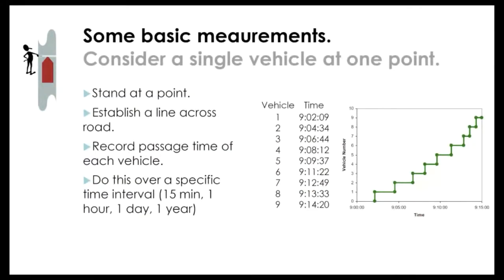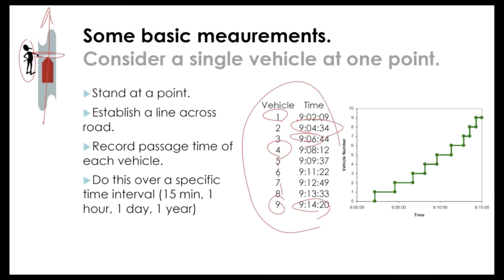For basic measurements, consider a single point on the road. Imagine you're standing on the side of the road, establishing a line across it, and recording the passage time of every vehicle. For example, vehicle one passes at 9:02:09, the second at 9:04, the third at 9:06, the fourth through ninth at 9:14. This data can be visualized in a cumulative plot.